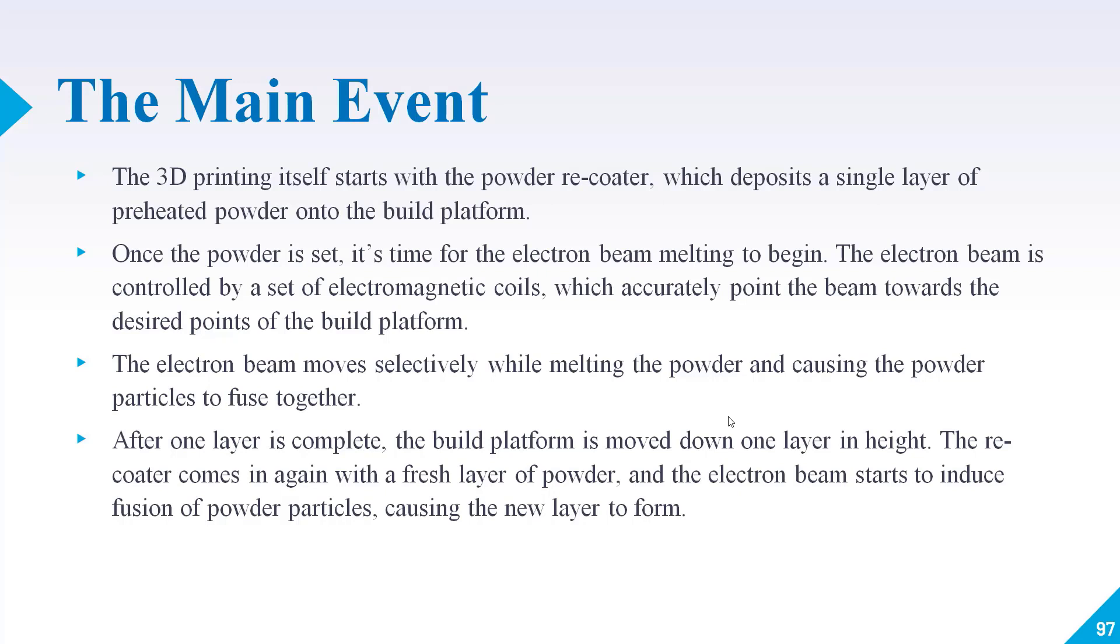After one layer is completed, the build platform is moved down one layer in height and the recoater comes in again. Like I told you in SLS, when one layer is completed your build platform will move down downwards one layer and another layer of powder will be given by the roller or recorder. Again this process will be repeated and after repetition several times your model will be completed.